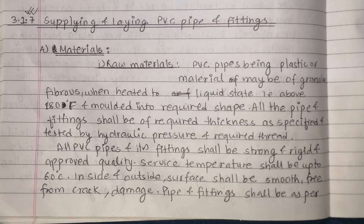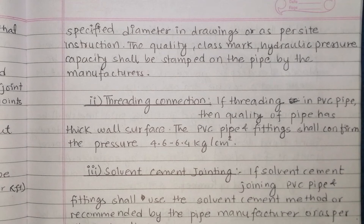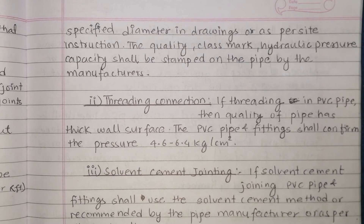Pipe and fittings shall be as per specified diameter and endurance, or as per site instruction. The quality class and ideal pressure capacity shall be stamped on the pipe by the manufacturer.